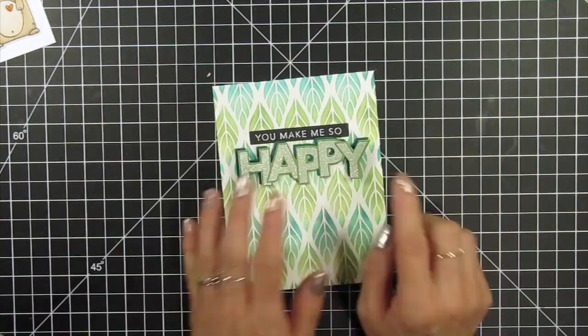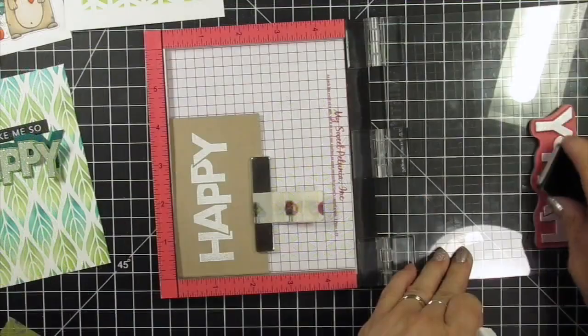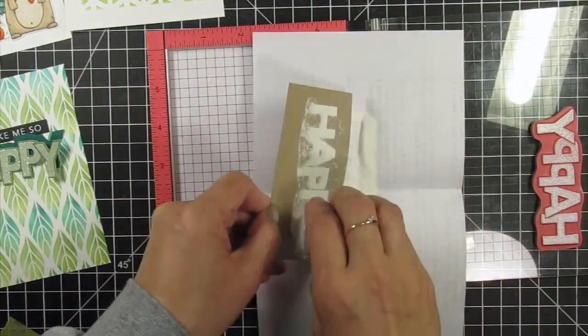Moving on to the last card, I'm once again heat embossing the On the Block Happy stamp, this time in white on Truffle cardstock.